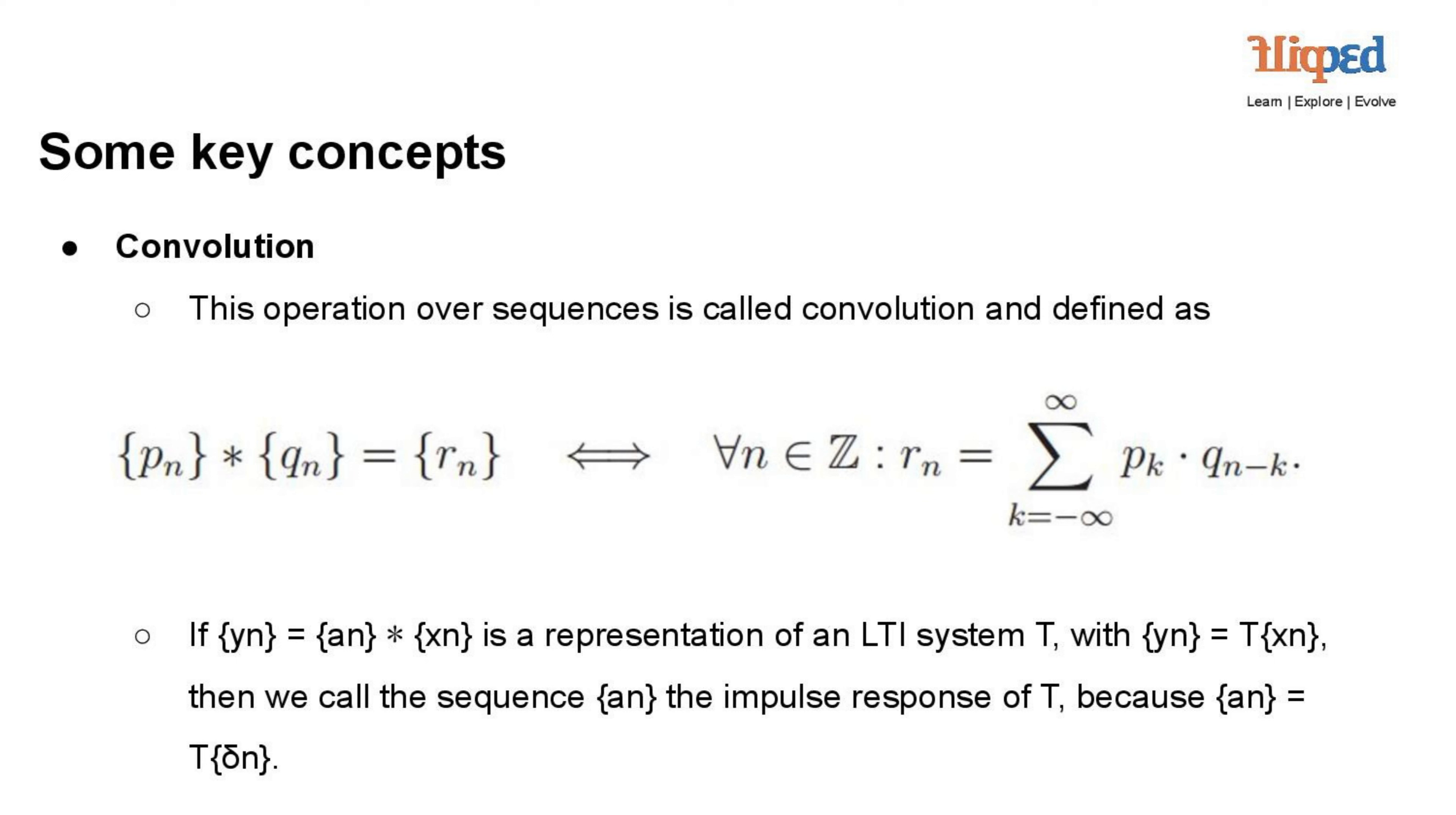This is because a(n) equals T delta n, where delta n is the unit impulse sequence.